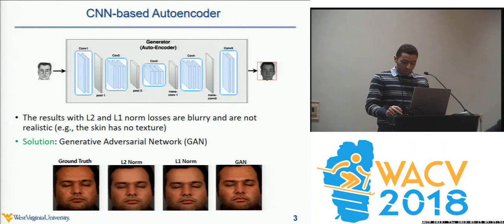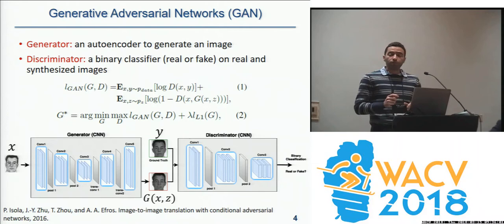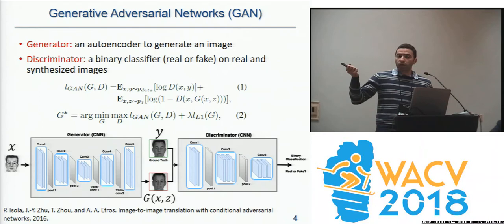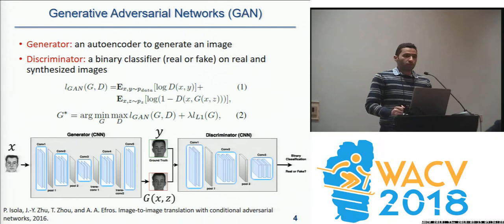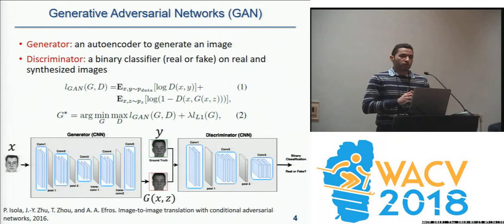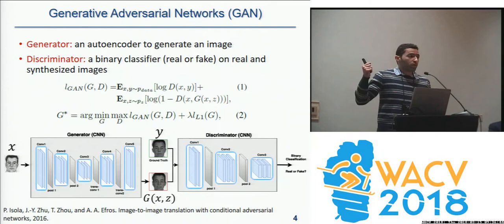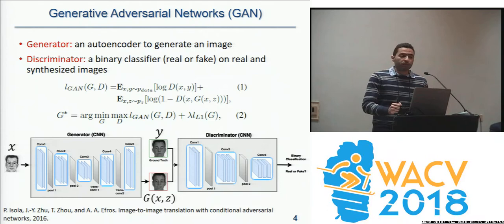The solution to blurry outputs is using Generative Adversarial Networks, or GANs. In a GAN, we have two separate networks: the first is the autoencoder — called the generator — trained for image generation, and the second is a discriminator used only during training. The discriminator is a binary classifier that learns to distinguish real photos from generated images. At the same time, the generator tries to fool the discriminator by maximizing the discriminator's classification loss, which it achieves by producing more realistic photos. That's the whole concept of GANs.